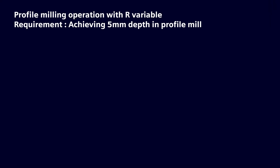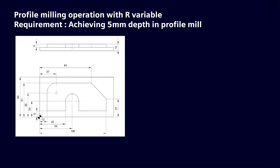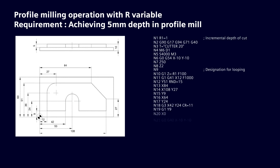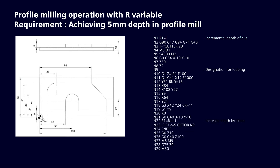Let us take an example of a profile mill which needs to be machined to a depth of 5 mm, and every time a depth of 1 mm cut needs to be machined. To mill this profile, let's consider a 20 mm diameter end mill and take work zero at the extreme left corner. Here we use the R1 variable to define the incremental depth of cut for the Z-axis. So mention R1 = 1 in the N1 block, then define the tool followed by spindle speed.